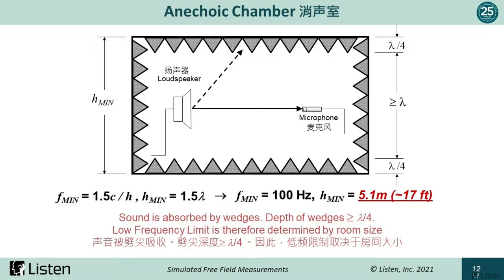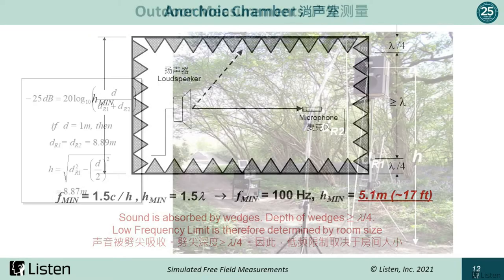A less expensive alternative is to measure outdoors, weather permitting. In order to attenuate the single reflection from the ground by at least 25 dB, the speaker needs to be at least 29 feet above the ground. In this photo, the speaker is only 10 feet above the ground and is not adequate.